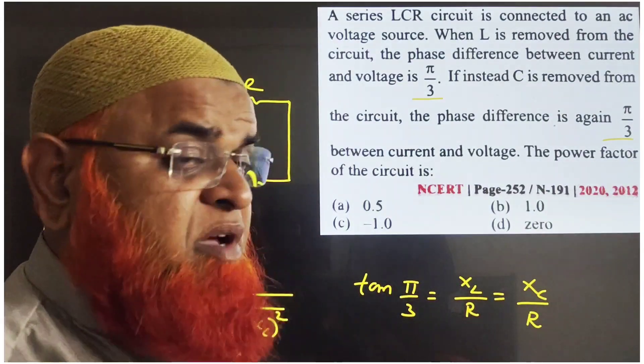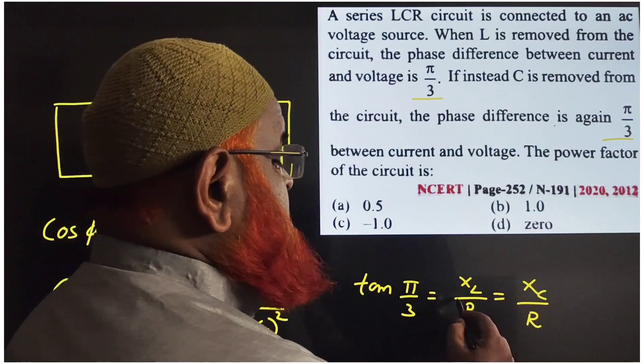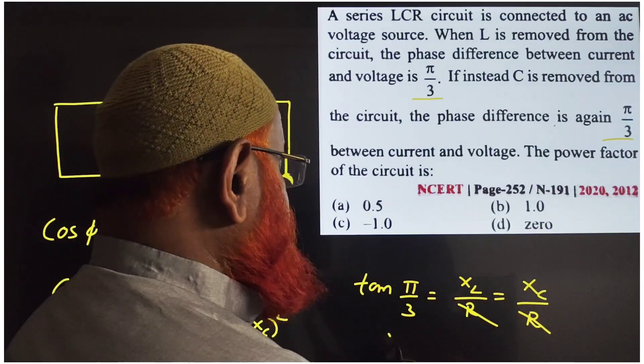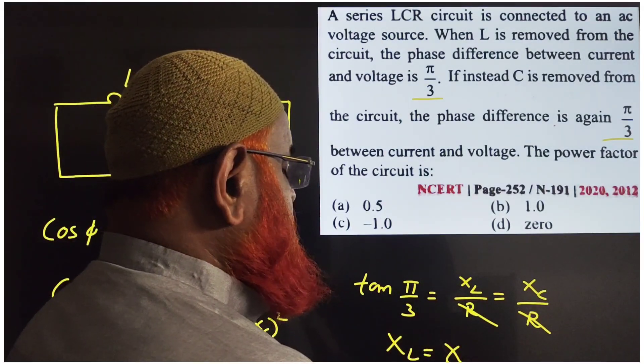I mean, both tan π/3 are common. That means these two are same. That means R, R is going to be cancelled. That means XL is equal to XC.